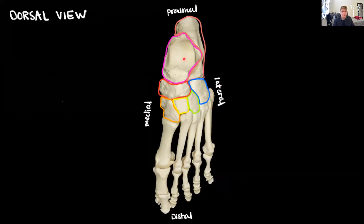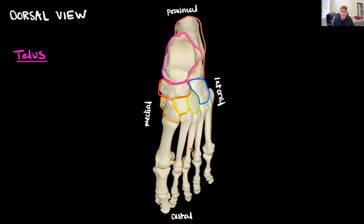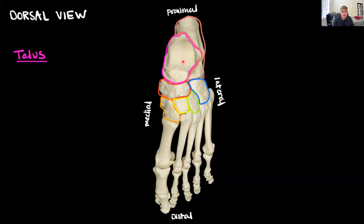Starting with the bone highlighted in purple — this is going to be the talus. I like to think 'talus equals tall': if you notice, the talus projects above all the other bones, so it's the tallest bone. The next bone, just inferior to the talus highlighted in salmon, is the calcaneus — our heel bone. The Achilles tendon actually attaches to the calcaneus.